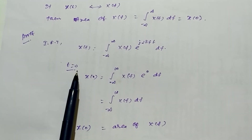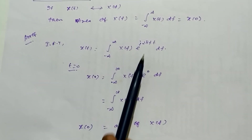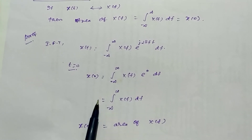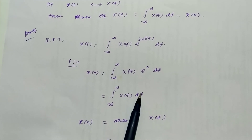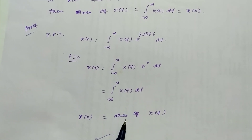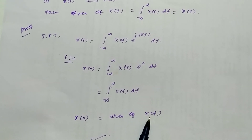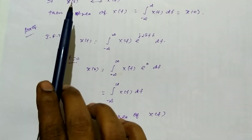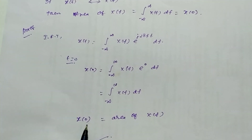We replace t equal to 0 in the inverse Fourier transform formula. So x(0) equals the integral, and e to the power 0 equals 1. According to the mathematics formula, this is nothing but the area of the given curve X(f). So the area of X(f) can be found by replacing t equal to 0 in the given time domain signal expression.